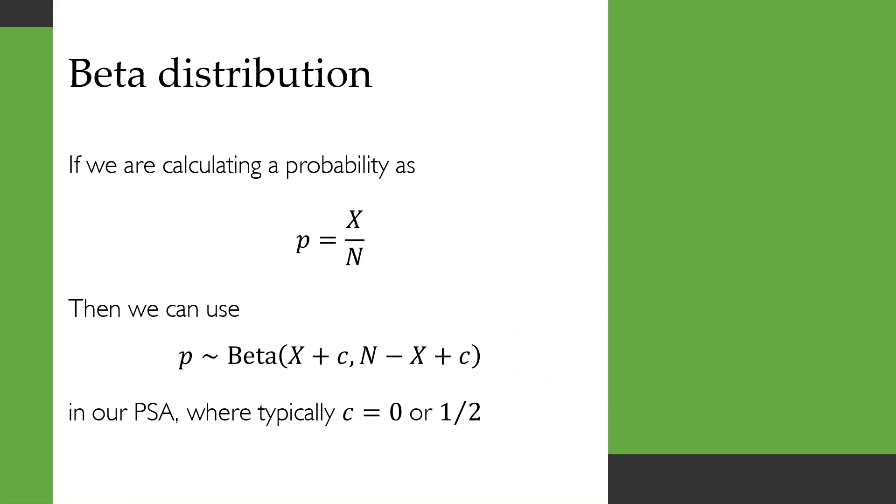So if we were in our model already calculating a probability by dividing x by n, then we can use the beta distribution in the PSA for that probability, and we'll set alpha equal to x plus some number c, and we'll set the beta parameter to n minus x and then plus c again. And typically we would use c equals 0 or c equals a half. When you use c equals a half, that's called the Jeffrey's prior. That's what I would typically use.